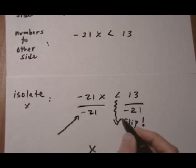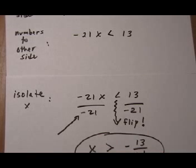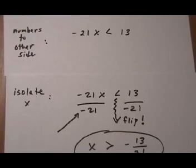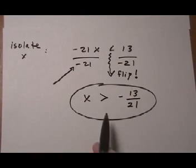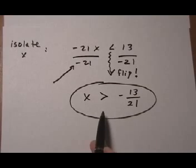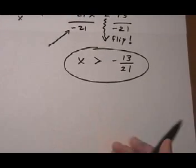So that gives us x. Instead of less than, it's greater than minus 13 over 21. And that's the final answer. And I believe in test 2 review, they're just asking you to get this final answer and not to graph it. But let's go ahead and graph it too because I want you to see how you graph something like this.